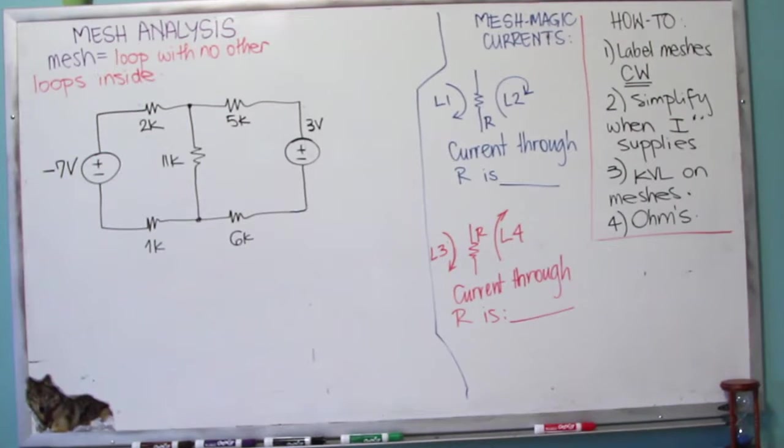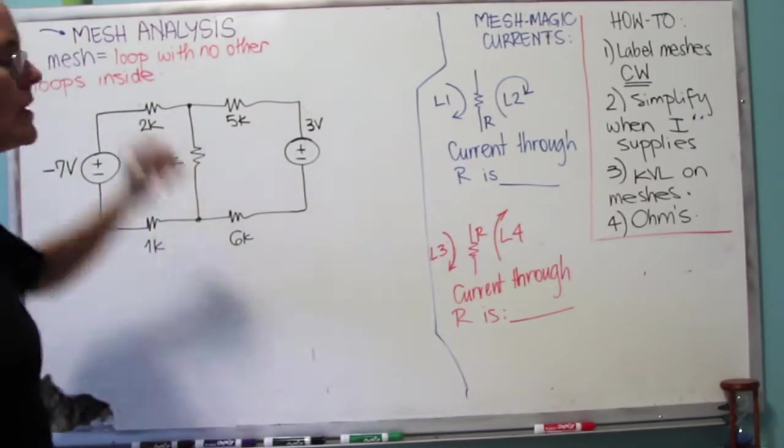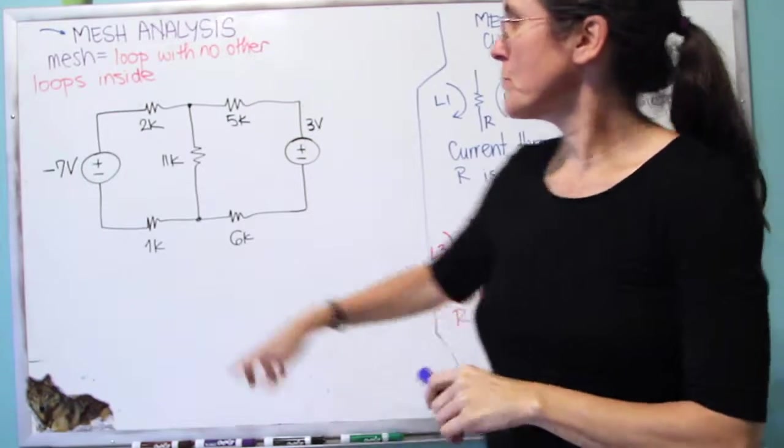So this is the second part of Chapter 3, Mesh Analysis. Mesh is defined as a loop that does not contain any other loops in it.